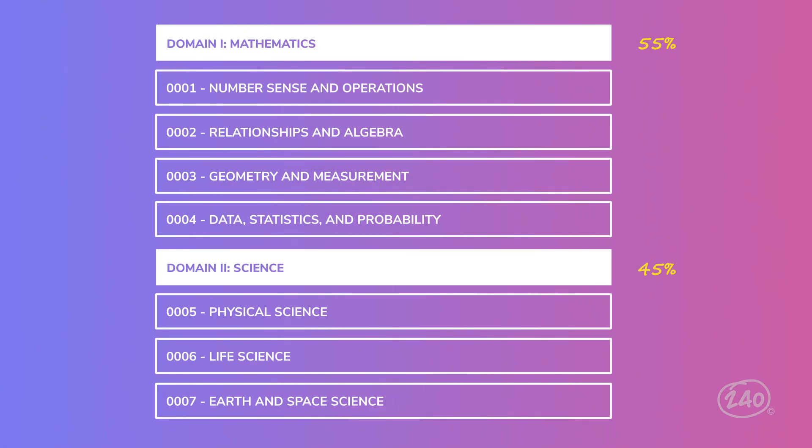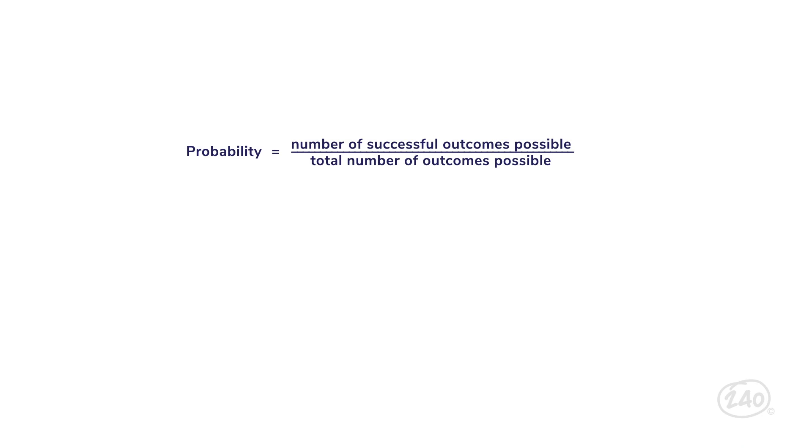Are you ready for the last math competency? This competency is about data, statistics, and probability. Probability has a very high probability of being on your exam. So let's take a closer look. Probability is the likelihood of an event occurring. It equals the number of possible successful outcomes divided by the total number of possible outcomes.